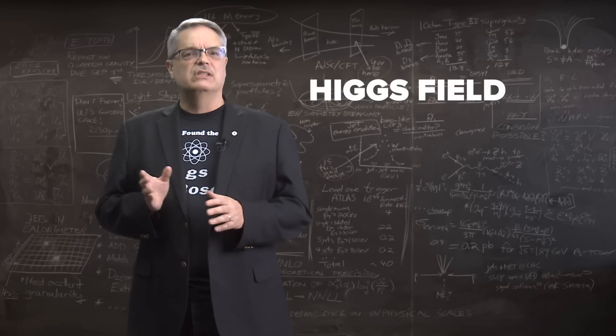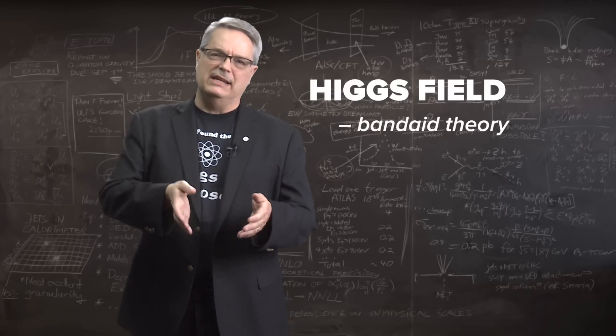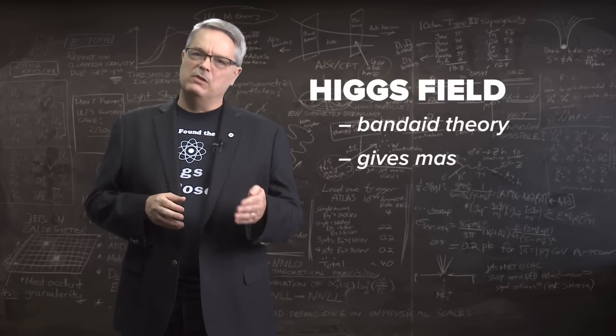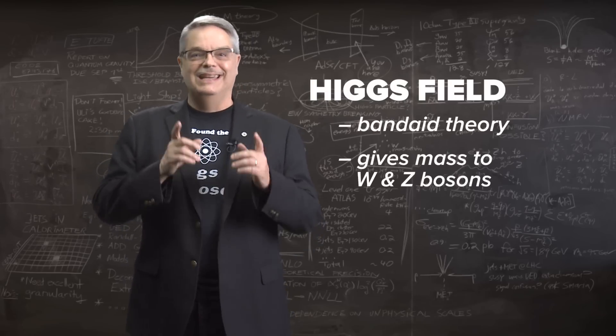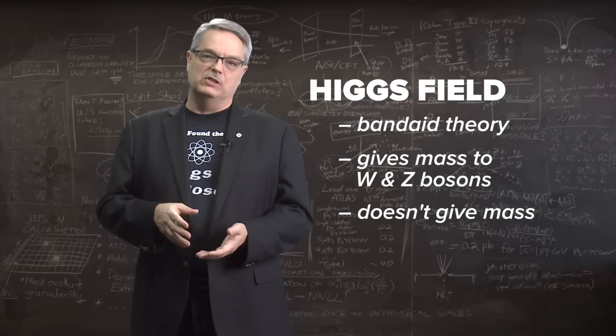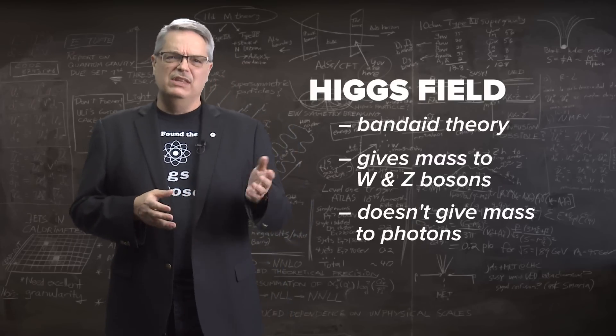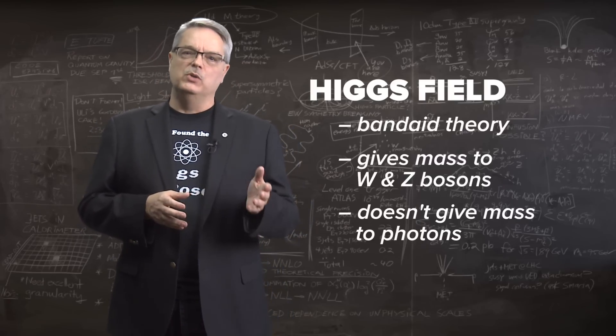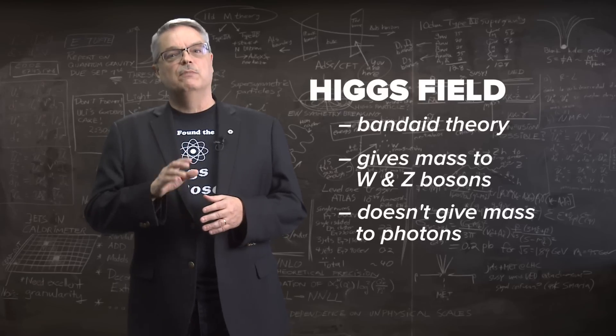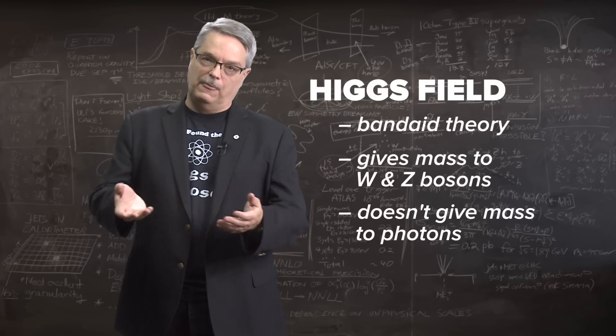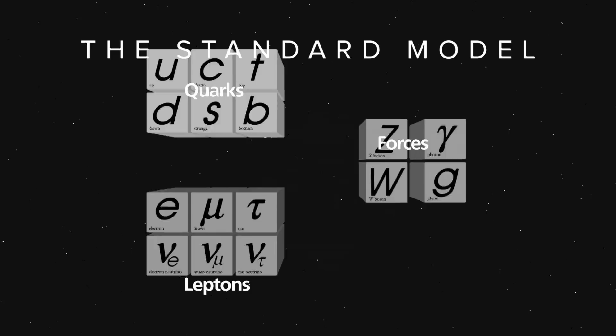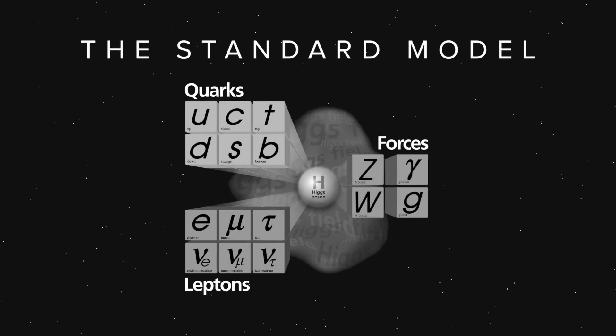The Higgs field is kind of like a band-aid theory that was added on. It gave mass to the particles that transmit the weak force, and didn't give mass to the particle that transmits electromagnetism. The name of the weak force particles are the W and Z bosons, while the name of the particle that causes electromagnetism is the photon. So that's how the Higgs field originally fit into the theory. It gave mass to the W and Z bosons, and not to the photon, which is also a boson.